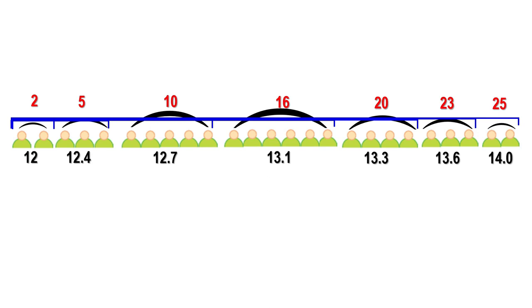The level of the 13th kid is the median. Therefore, the median is 13.1. Instead of drawing like this, we can do this using a table.